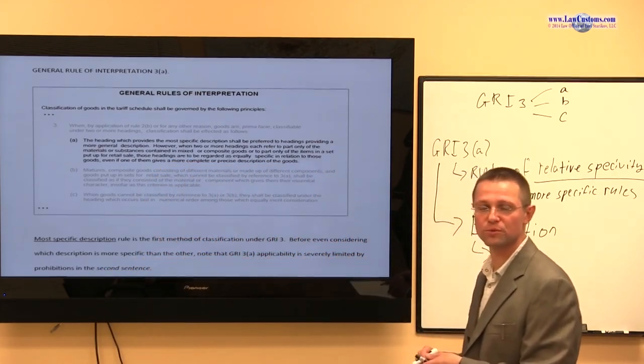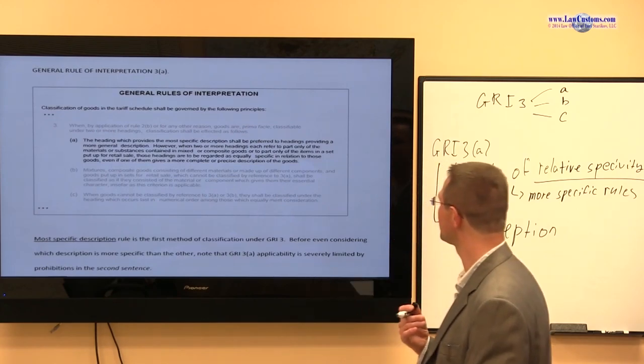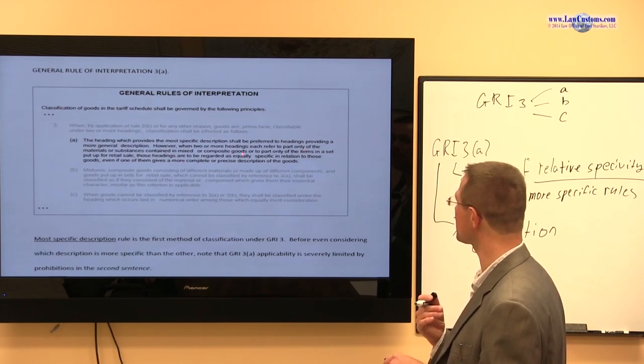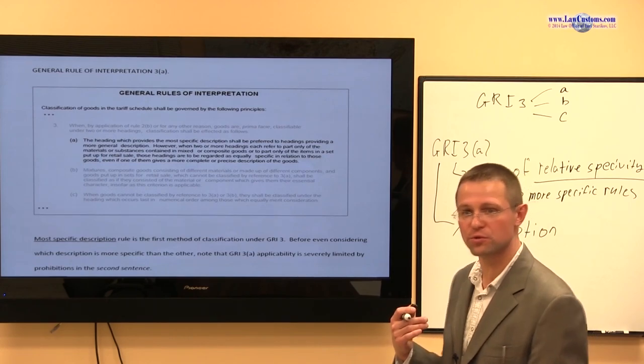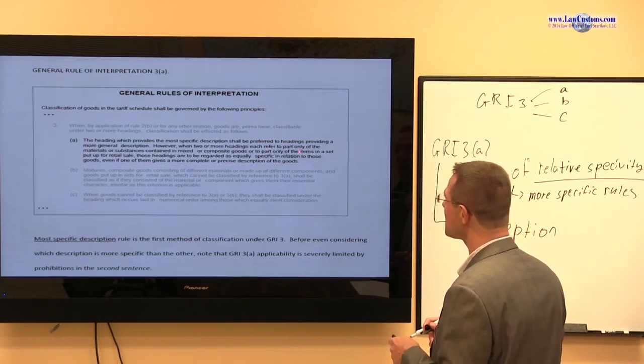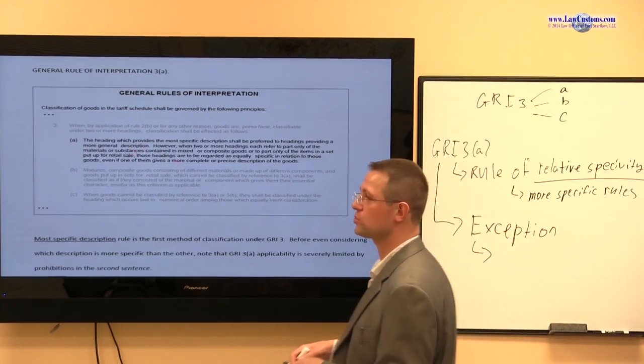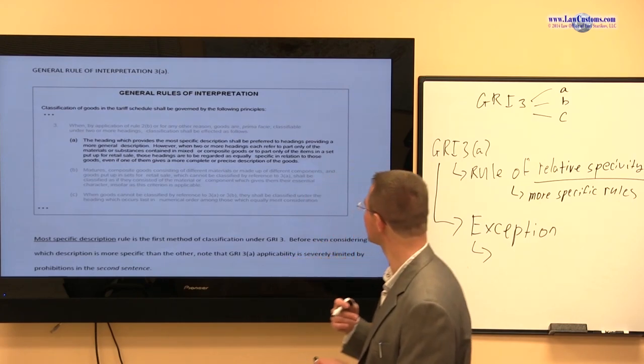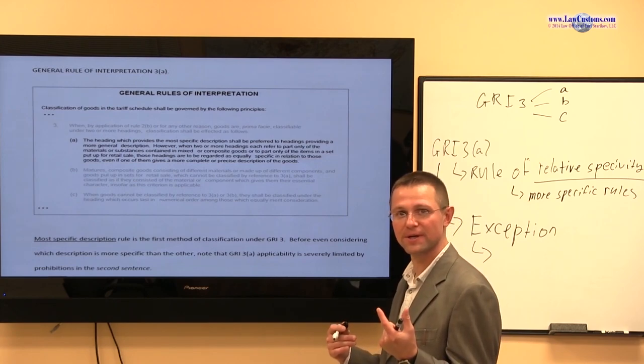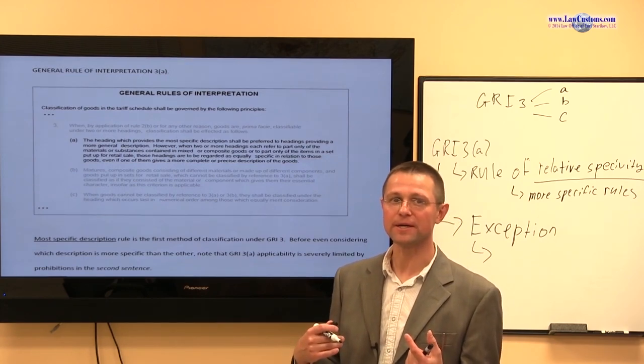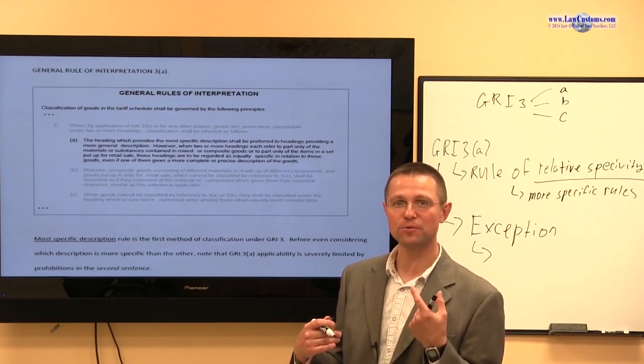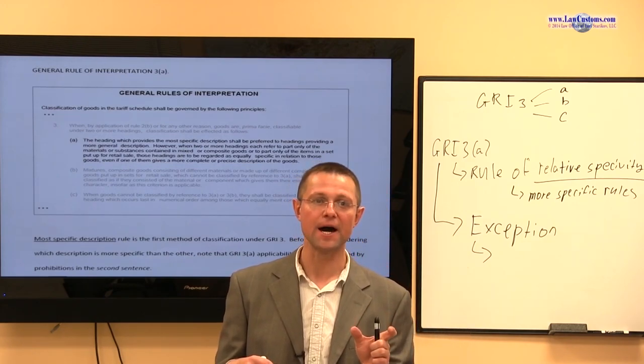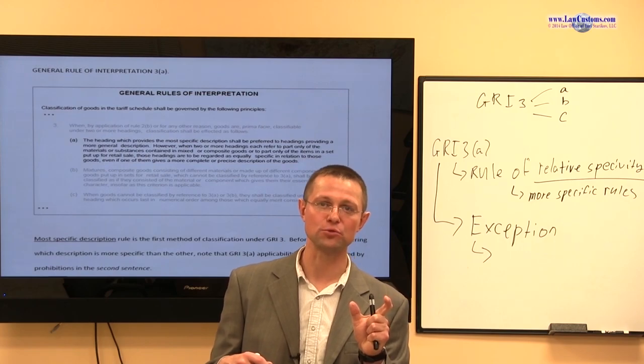We may be able to do that later, for example, under the essential character analysis. If we may. But not under rule of relative specificity. So what does it also mean? When are we allowed to make such comparison? Well, when we have reference to only a part of material or substance contained in a mixed or composite good. What does it mean? It's very well - part of a material or substance contained in a mixed or composite good. That means that if we make the analysis under this clause part of that material in a mixed or composite good, we can only make this analysis if we classify the product or analyze the classification for the product as the make, not use product.